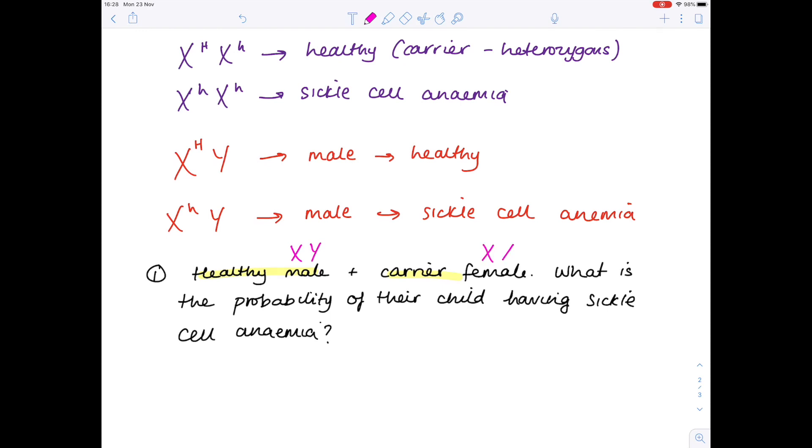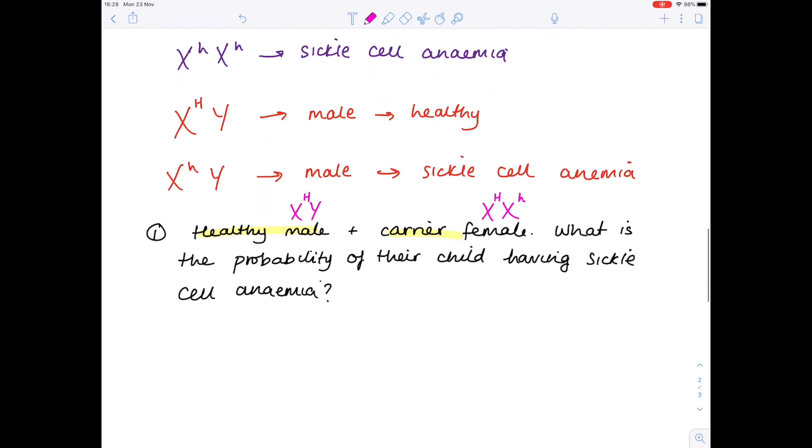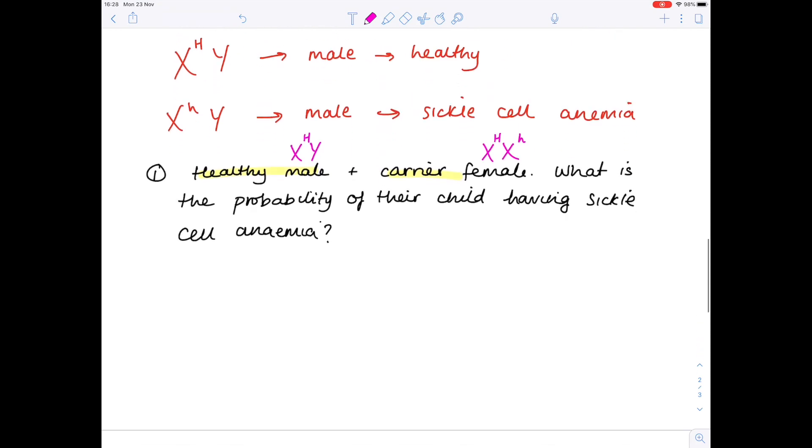The male is healthy, which means he must have an uppercase allele because that would mean that he does not have the disease. Now the carrier female is also healthy, so she's going to have one uppercase H and one lowercase h. So we're now ready to lay out our answer properly.